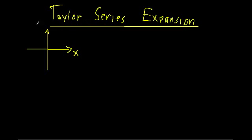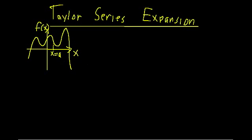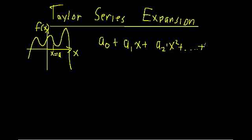Let's draw out an arbitrary function f of x — really odd, messy. If we're interested in just the behavior of this function around one region, let's say near x equals a, we can use a Taylor series expansion. It approximates an unusual or complicated function in terms of a polynomial, which is of the form: a constant a-naught plus a1 times x plus a2 times x squared, and as many additional orders as you need up to a_n times x to the n. The more orders you add, the better your approximation should be.